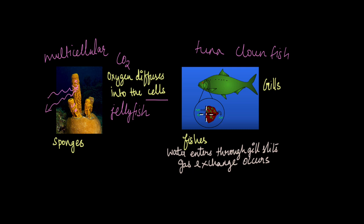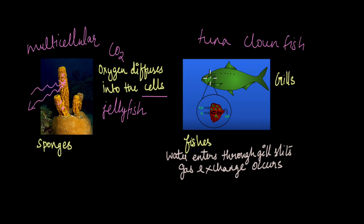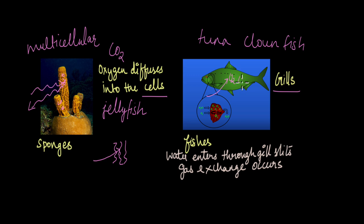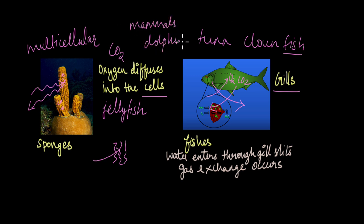When it comes to fishes, there is still diffusion of gases, but fishes have specialized structures on their sides known as gills — slits or openings on the surface of the fish. Water enters the fish's body through the gills; within the gills, oxygen diffuses from the water into the fish's body, and carbon dioxide diffuses from the fish's body into the water, leaving with it when the water exits the gills. That's how fishes breathe. However, aquatic mammals like dolphins and whales don't use gills — they have lungs to breathe.